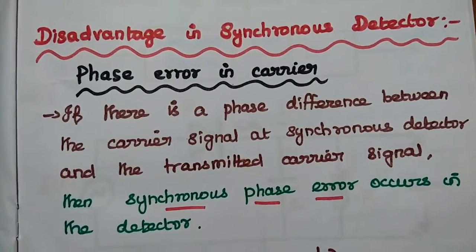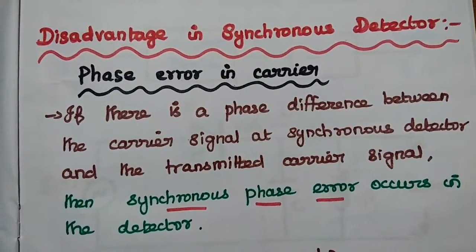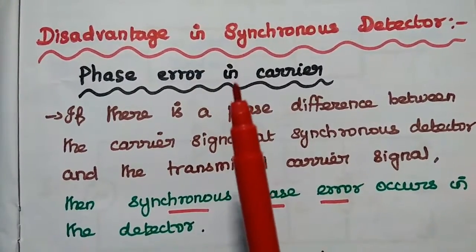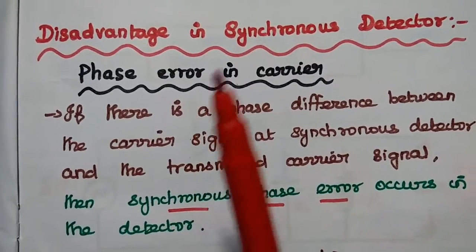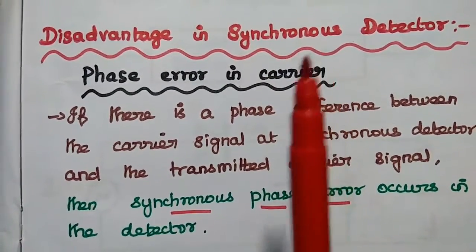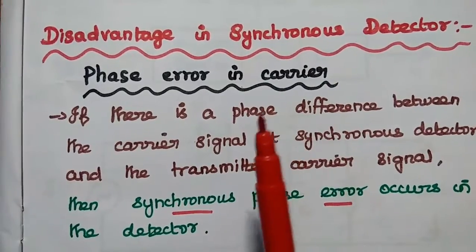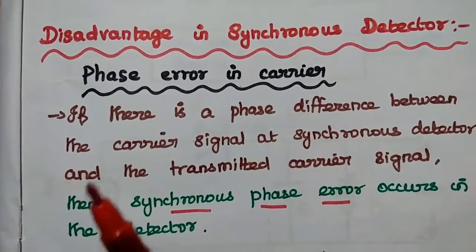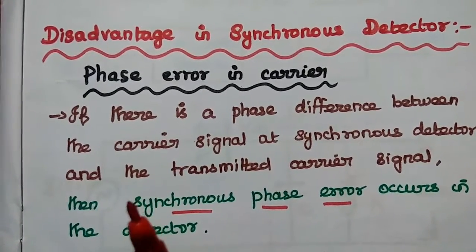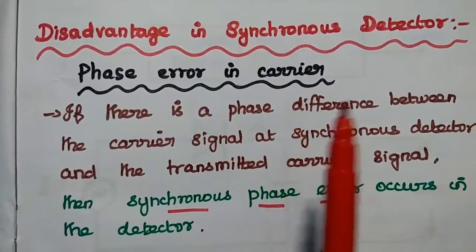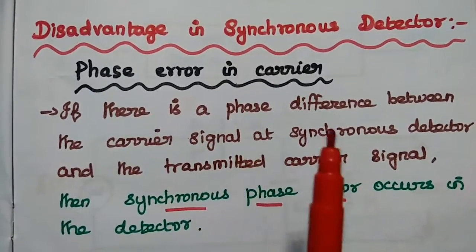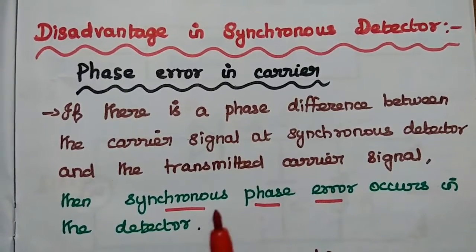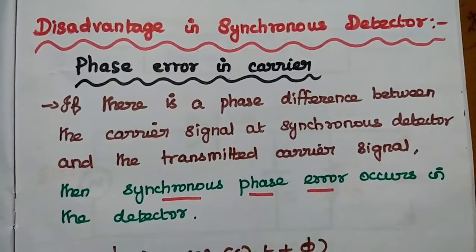Disadvantage of synchronous detector: phase error is the major problem in synchronous detector. The carrier signal should be exactly synchronized at both the transmitter side and receiver side. If there is a phase difference between the carrier signal at the synchronous detector and the transmitter carrier signal, then a synchronous phase error occurs.